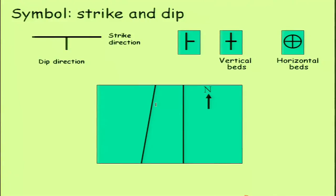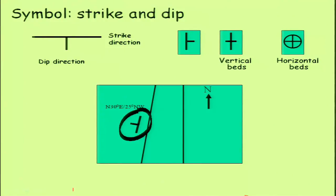If you have the information of the dip, you can put this information using the symbol for strike and dip. For example, 25 degrees is the amount of dip and northwest is the direction in which you are having the dip. So northwest will be this direction, and this is your east-west orientation.